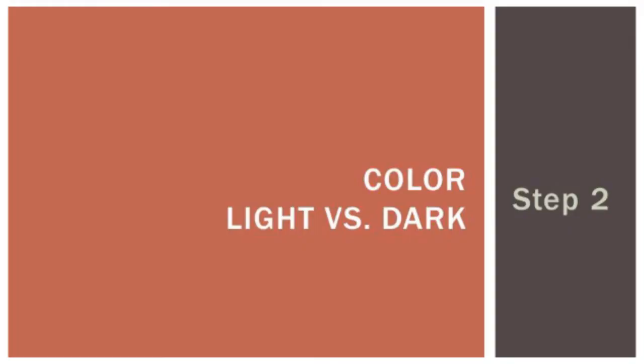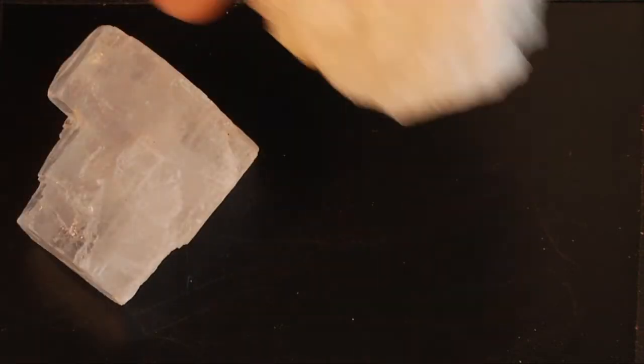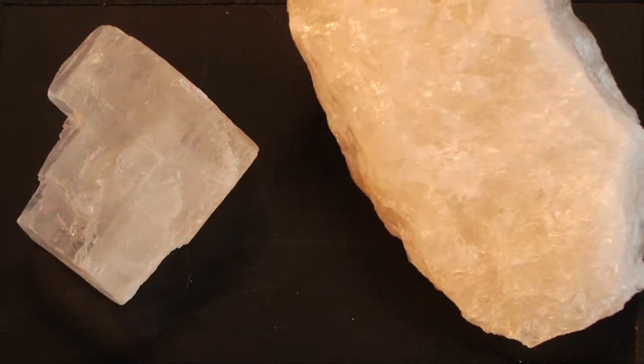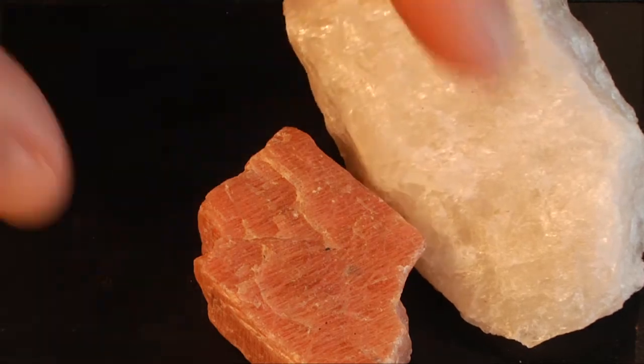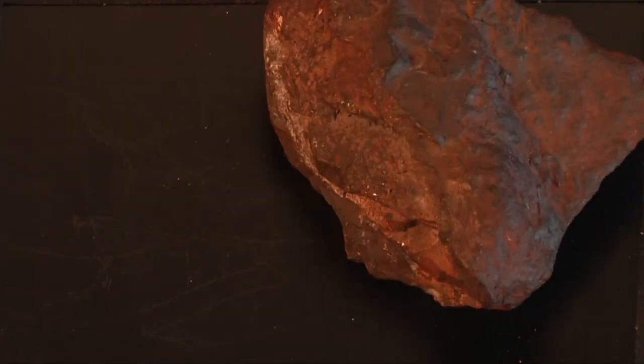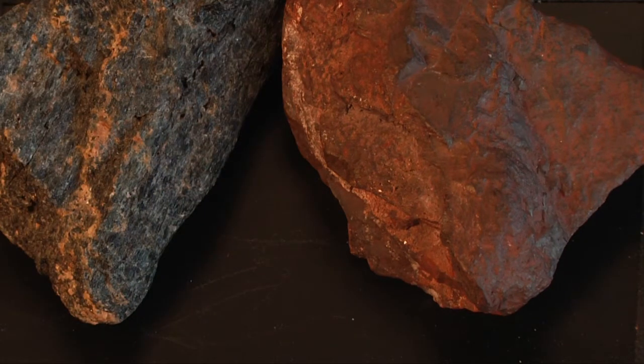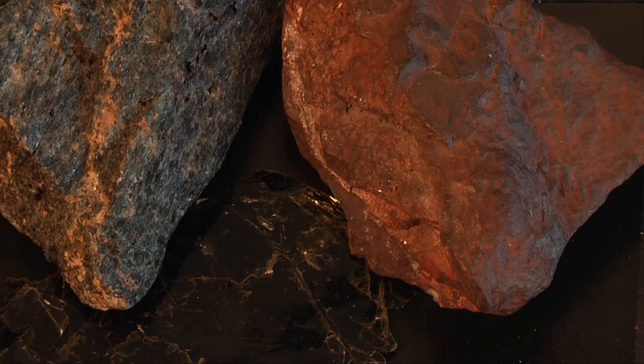The next property is light versus dark. So light in color. Is it white, clear, or pink? Could be examples of light-colored minerals. Dark-colored minerals are going to be maybe reddish, maroon in color. It could be black, brown in color. The light versus dark is for non-metallic minerals only.